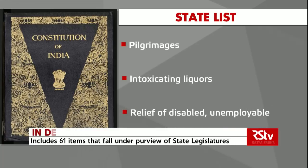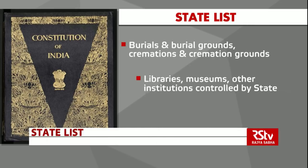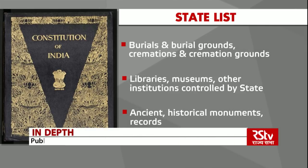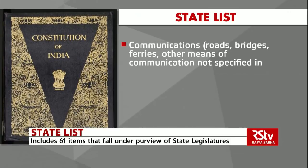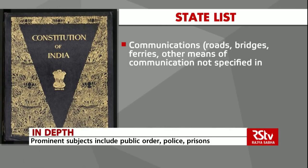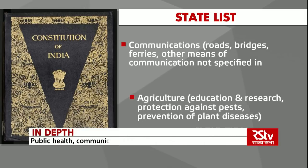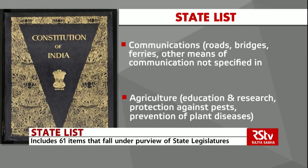Relief of the disabled and unemployable. Burials and burial grounds. Cremations and cremation grounds. Libraries, museums and other similar institutions controlled or financed by the state. Ancient and historical monuments and records other than those declared to be of national importance. Communications which includes roads, bridges, ferries and other means of communication not specified in the union list. Municipal tramways, ropeways, inland waterways and vehicles other than mechanically propelled vehicles. Agriculture including agricultural education and research, protection against pests and prevention of plant diseases.